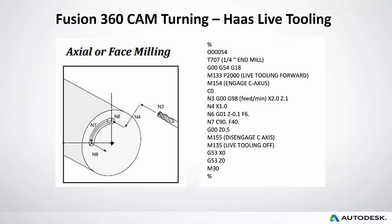For axial face milling, here's an example program of what to expect. We're doing axial milling along the face of a part. You'd see the G18 plane, M133 turning the live tool on forward, M154 engaging the C axis going to C0, then machining and milling on the front face — rotating to C90 as it goes around. Then we disengage the C axis, turn off the live tool with M135, and move on to the next operation.